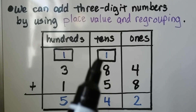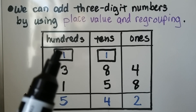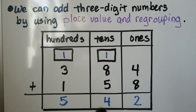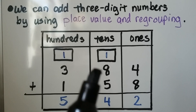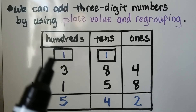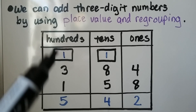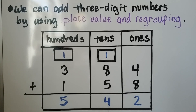We add 8 plus 5 plus 1, that's equal to 14. We regroup the ten tens up here and the four tens down here, because we're adding one ten plus eight tens plus five tens. That gives us 14 tens. We regroup ten tens up here as a hundred and put the four tens in the tens place. Then we add the hundreds place value: one plus three plus one is equal to five. So it's equal to 542. That's our sum.